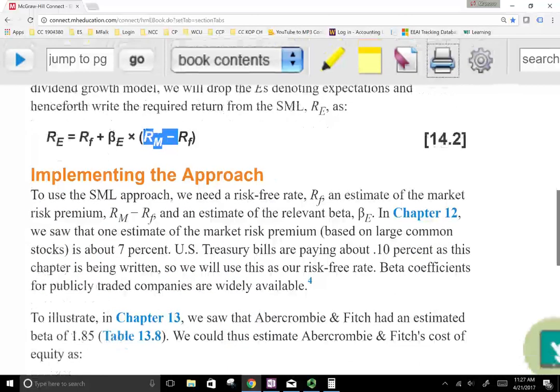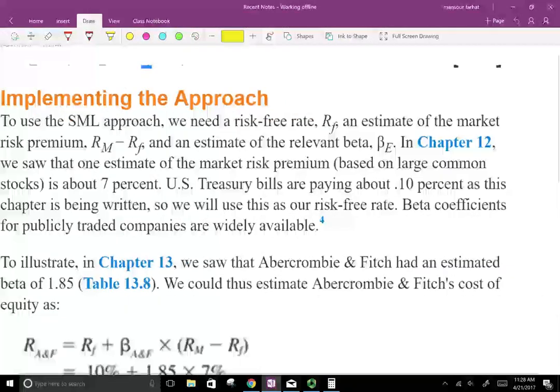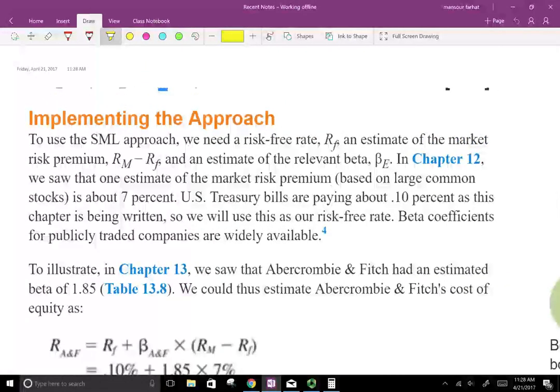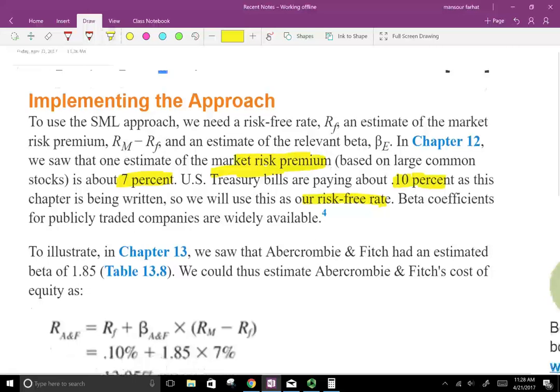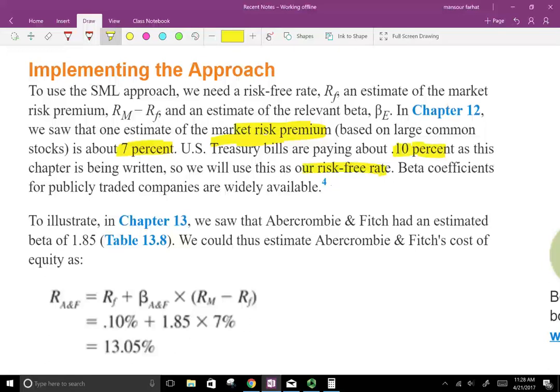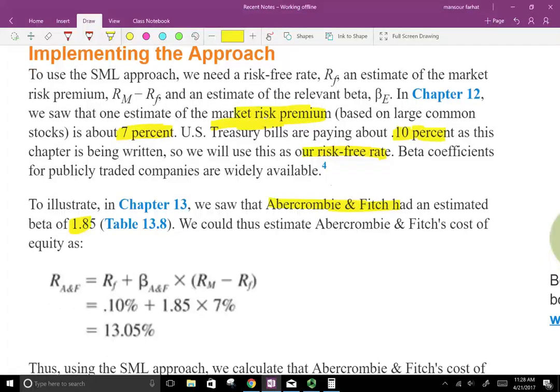So let's go ahead and look at an example to see how this method works. Let's assume that the market risk premium is 7%. U.S. Treasury are paying about 0.9%. Well, it doesn't matter for now, but let's assume it's 7%. And the Treasury will be paying 0.1%, not 10%, 0.1%. So the risk-free rate is 0.1%. We're going to use the market premium is 7%. And the beta coefficient for this company, which is Abercrombie & Fitch, which is a publicly traded company, is 1.85%. So let's find the required rate of return for Abercrombie & Fitch.